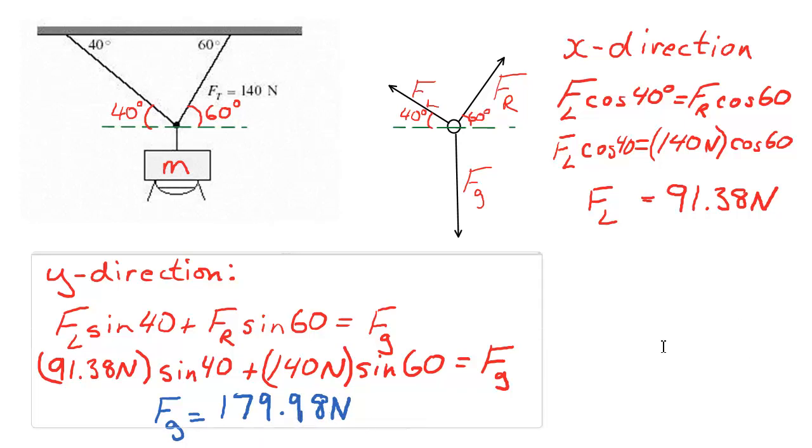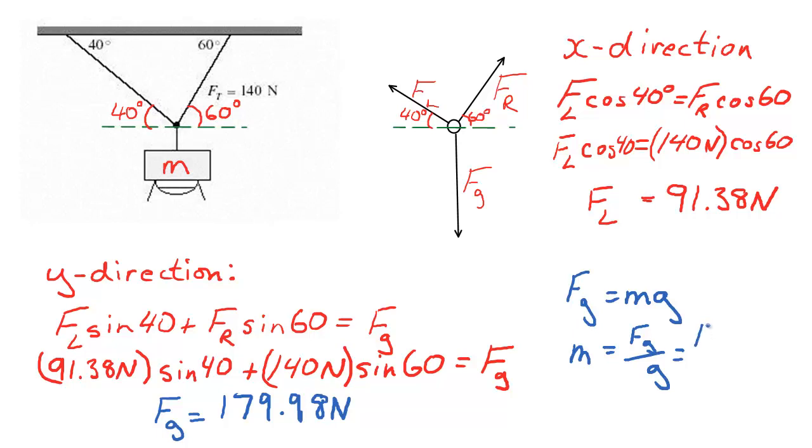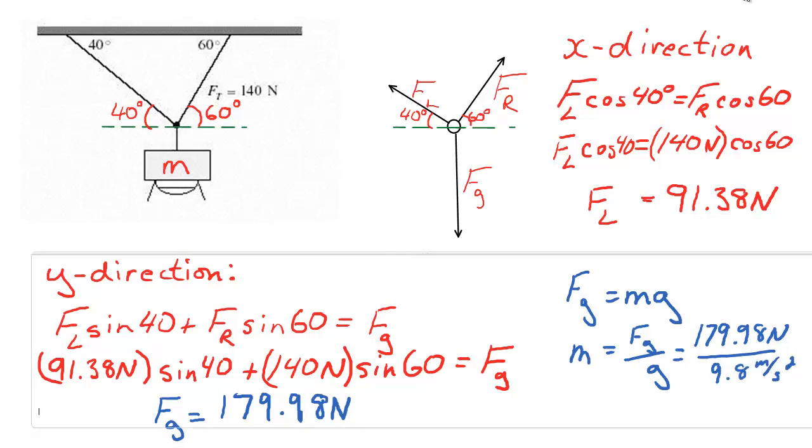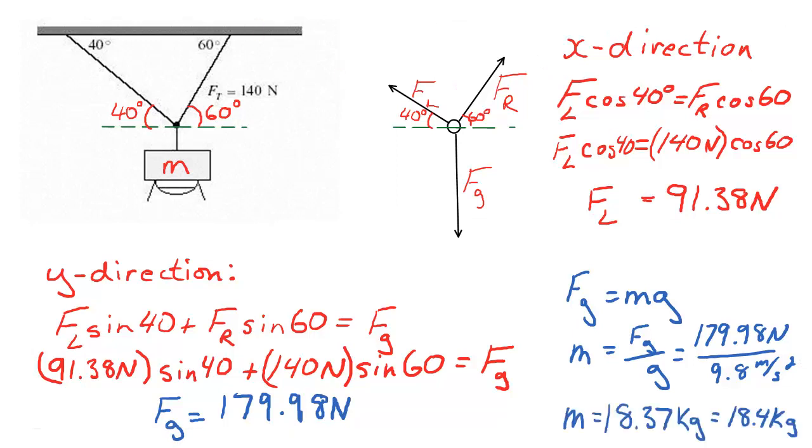Now all that's left is to answer the question, what is the mass? Well we know Fg is equal to Mg, so the only thing left is to say Fg equals Mg, and solve for M. So we get 179.98 divided by 9.8, and we end up with the following answer. We get our mass to be 18.4 kilograms once I rounded it off to a few significant figures.